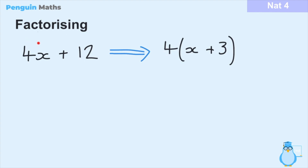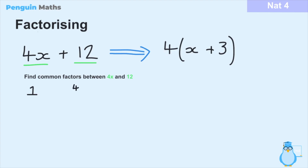So when we want to transfer 4x plus 12 into something with brackets, we have to look at each part of the expression and find a common factor between 4x and 12. The first and most common factor is 1, because any whole number can be divided by 1. So 4x divided by 1 gives us 4x, and 12 divided by 1 is equal to 12. Because these answers are whole numbers, 1 is a common factor.